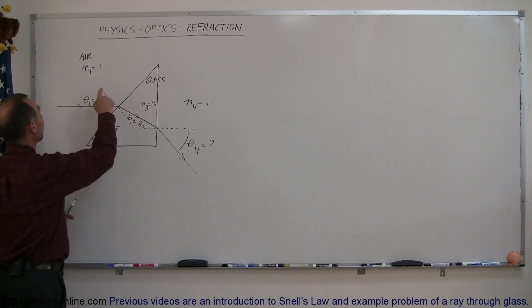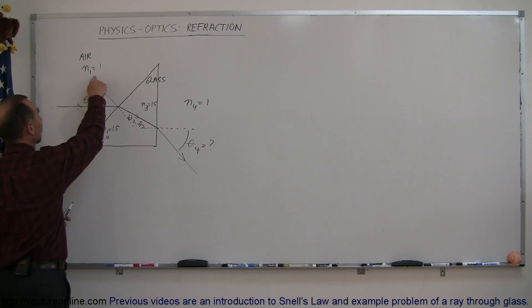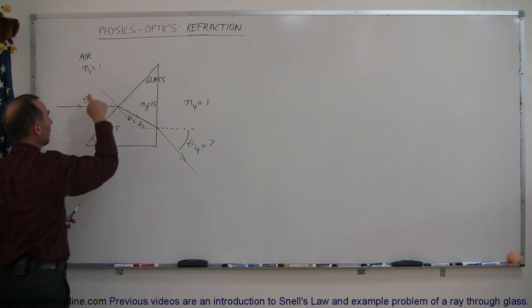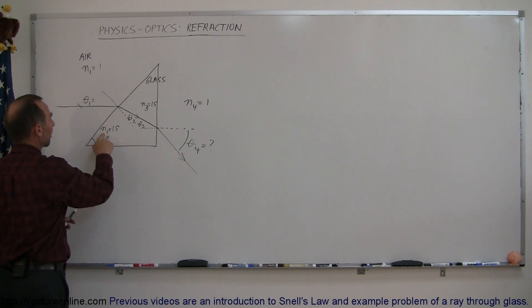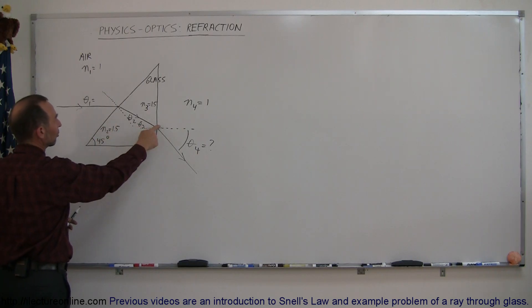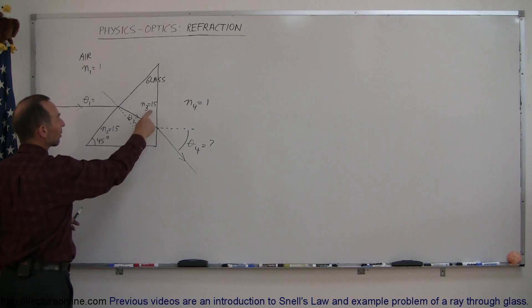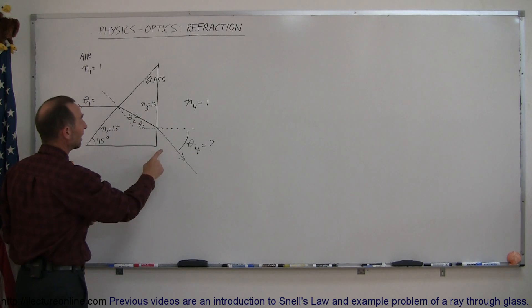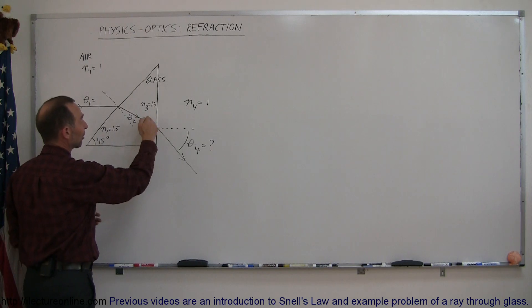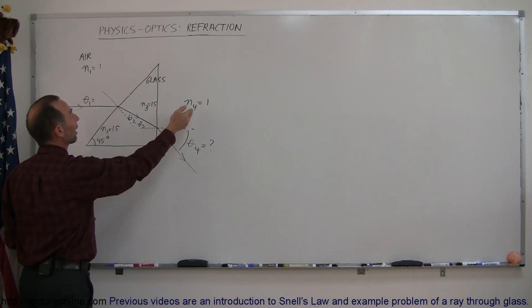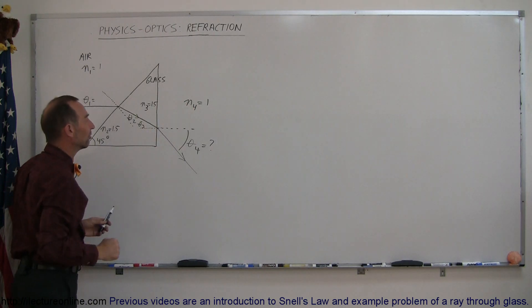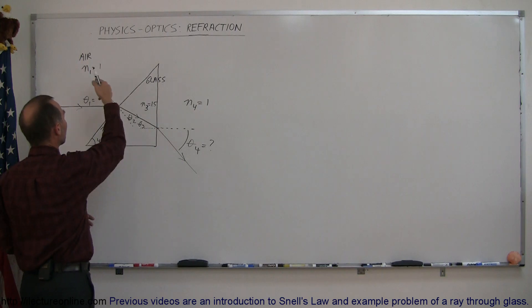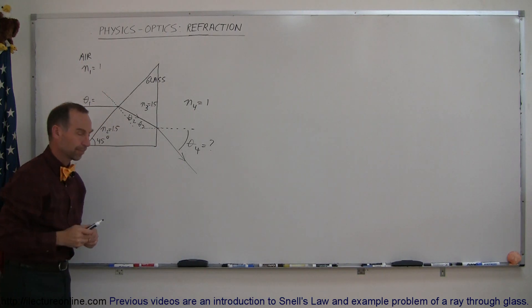The index of refraction on this side of the first boundary is n sub 1, and on the other side is n sub 2. The index of refraction on this side of the second boundary is n sub 3, which of course is the same as n sub 2 since you're still inside the glass. Then the index of refraction on the other side of the second boundary is n sub 4, which is back to what we started with — air.